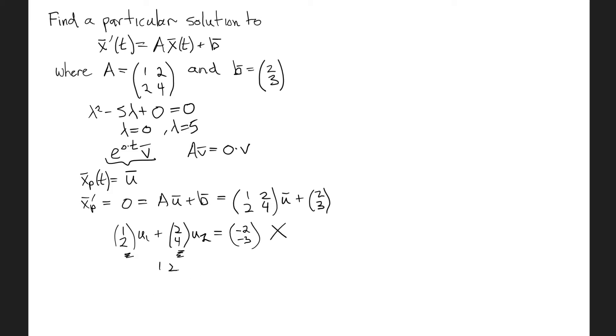You can do a quick row reduction, 1, 2, 2, 4, minus 2, minus 3, and you'll see that you get twice the first row subtracted from the second gives me a row of zeros on the left side, and minus 3 minus twice that one is plus 4 is 1. So you can see that there is no solution, and this guess up here was the problem. It's too similar to the homogeneous solution, and that's why we were unable to use a linear combination of the columns to solve this problem.